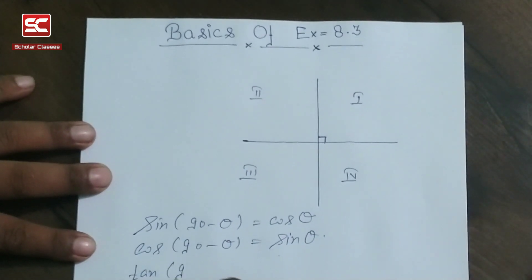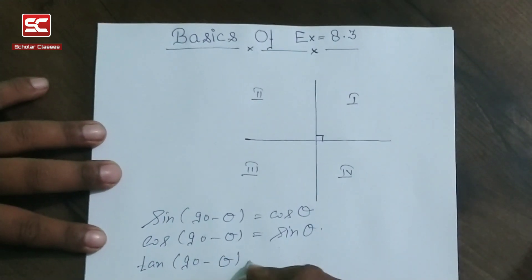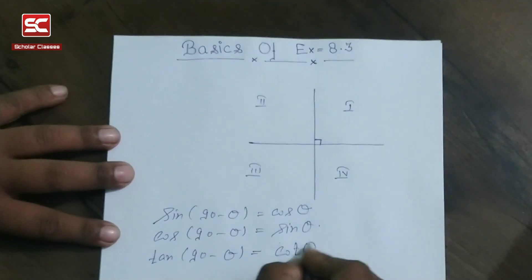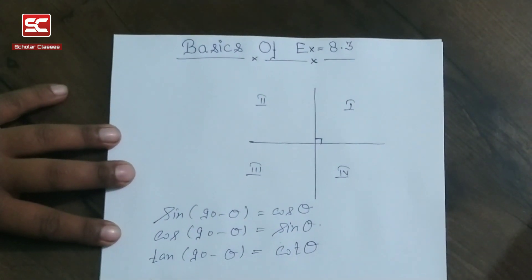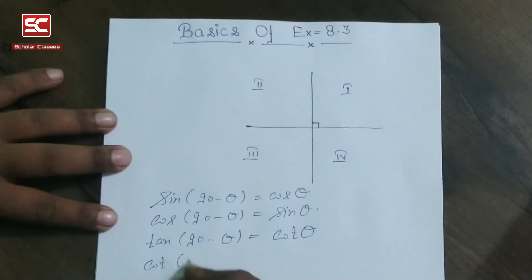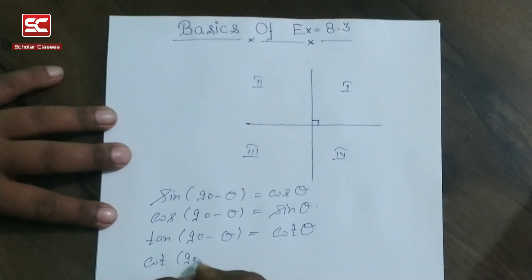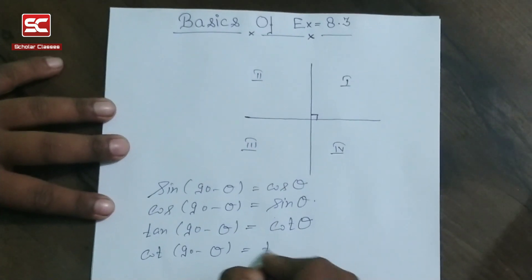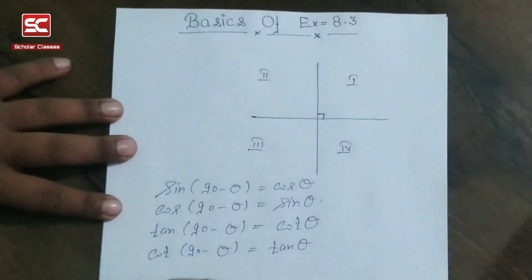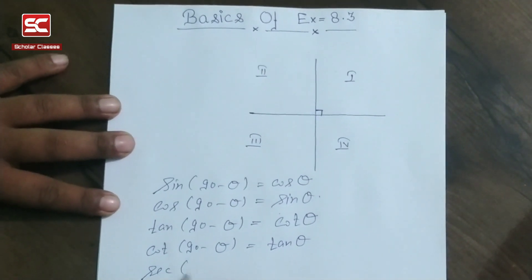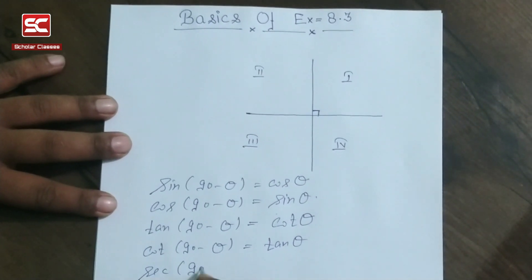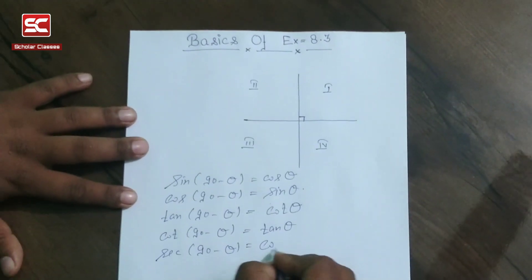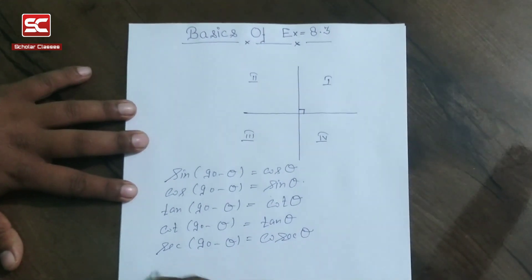tan(90 minus theta) is equal to cot theta. cot(90 minus theta) is equal to tan theta. sec(90 minus theta) is equal to cosec theta. Here all values come under quadrant one and all values are positive.